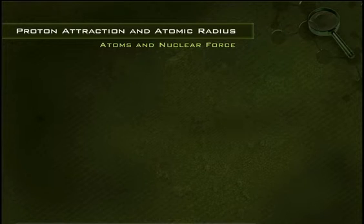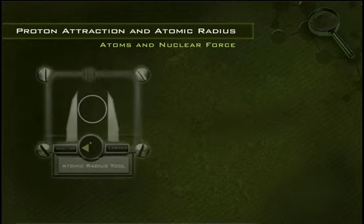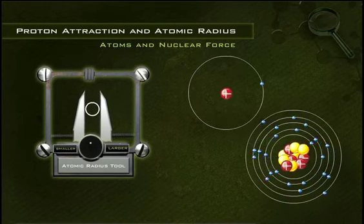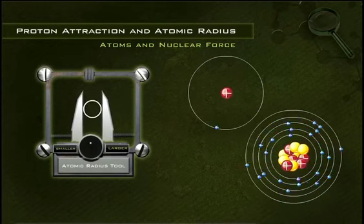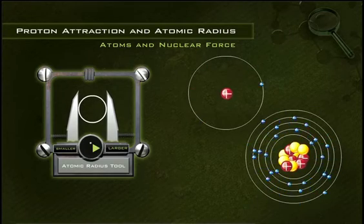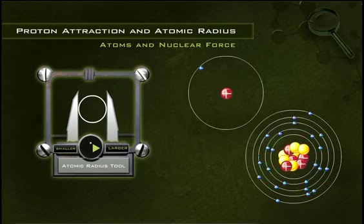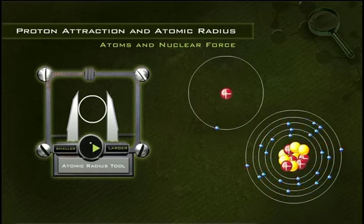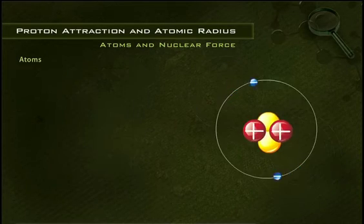The third analysis tool you'll need as a PTI is the atomic radius tool. You will use it to help identify elements and to see how they are behaving on a nuclear level. It will also allow you to determine whether elements are highly reactive or slightly reactive.